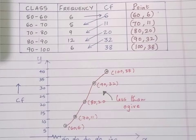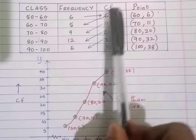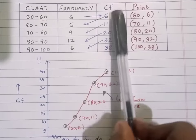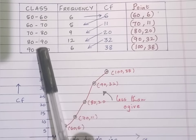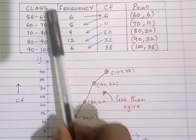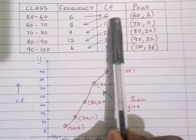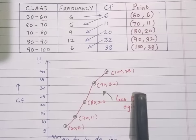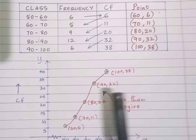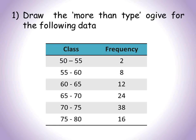Students, you have to remember: for less than type OJAL, you need to find out the cumulative frequency. You should consider upper limits. The upper limit is plotted against the cumulative frequency. Then all the points are plotted and the graph should be drawn freehand.